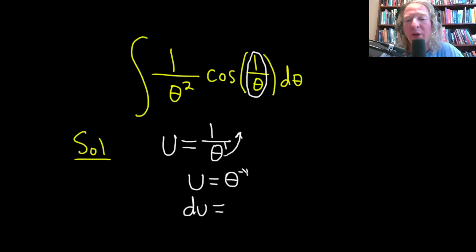Here we'll use the power rule. We'll bring down the negative 1, negative theta, and then subtract 1 from the exponent. So negative 1 minus 1 is negative 2. And then we still have the d theta. Very nice.